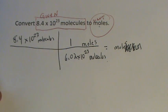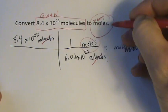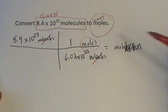Now that my problem is set up and I see that molecules will cancel out, I'm going to be left with moles, which is what I want. If I started out and didn't catch my error, I would be able to catch it at the end because things wouldn't match up.